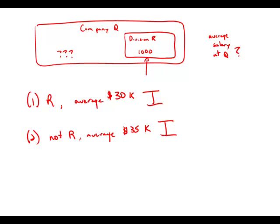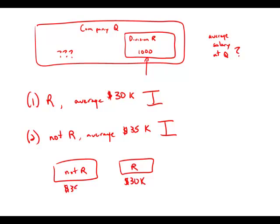Now we combine the statements. We have two groups: Division R with an average salary of thirty thousand, and the people not in R with an average of thirty-five thousand, and we'd like to know the overall average. The problem is we know we have a thousand people in R, but we have no idea what the size of the not-R group is. There could be a thousand not in R, or only five, or ten thousand, or a hundred thousand. We have absolutely no idea how the size of the not-R group compares to R, which means we cannot calculate an overall average salary for everyone at Company Q. Even combining the statements, they are insufficient.